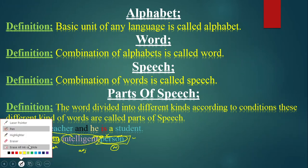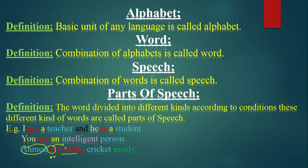The third sentence is: 'Ahmad is playing cricket nicely.' We have a new word in green — adverb. 'Ahmad' is the name of a person — a noun. 'Is' is your verb, specifically a helping verb that indicates tense — whether the action is in past, present, or future. 'Playing' is the action verb. 'Was playing' is past, 'is playing' is present progressive, and 'will be playing' is future progressive.